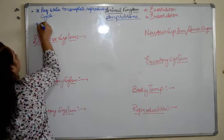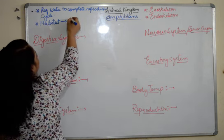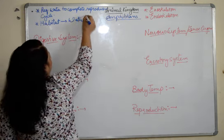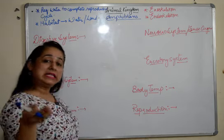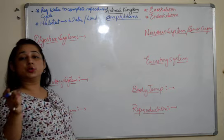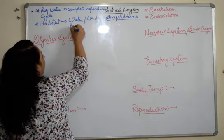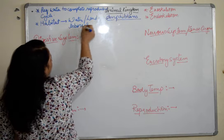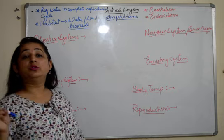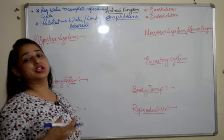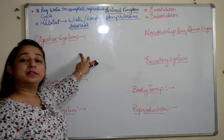Their habitat would be water and land — they can survive in both terrestrial and aquatic environments. Some are also arboreal, meaning they live on trees. You must have heard about the tree frog — there are some species which can survive on trees as well. So these are the habitats where amphibians are found.